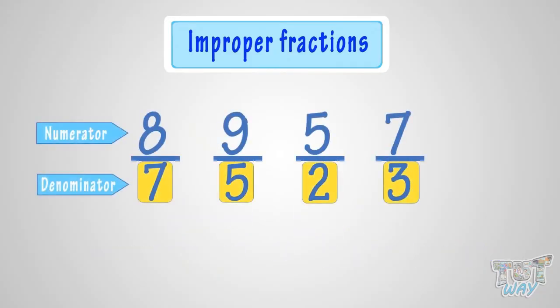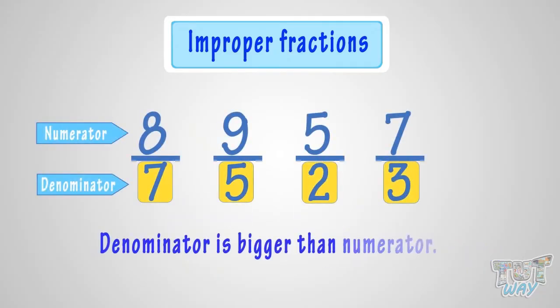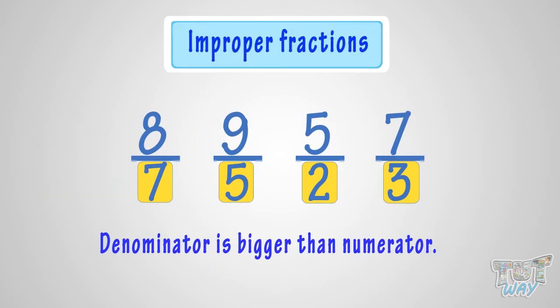Here, the numerator is bigger than the denominator, so it's an improper fraction. All these are examples of improper fractions, as the numerator is bigger than the denominator.